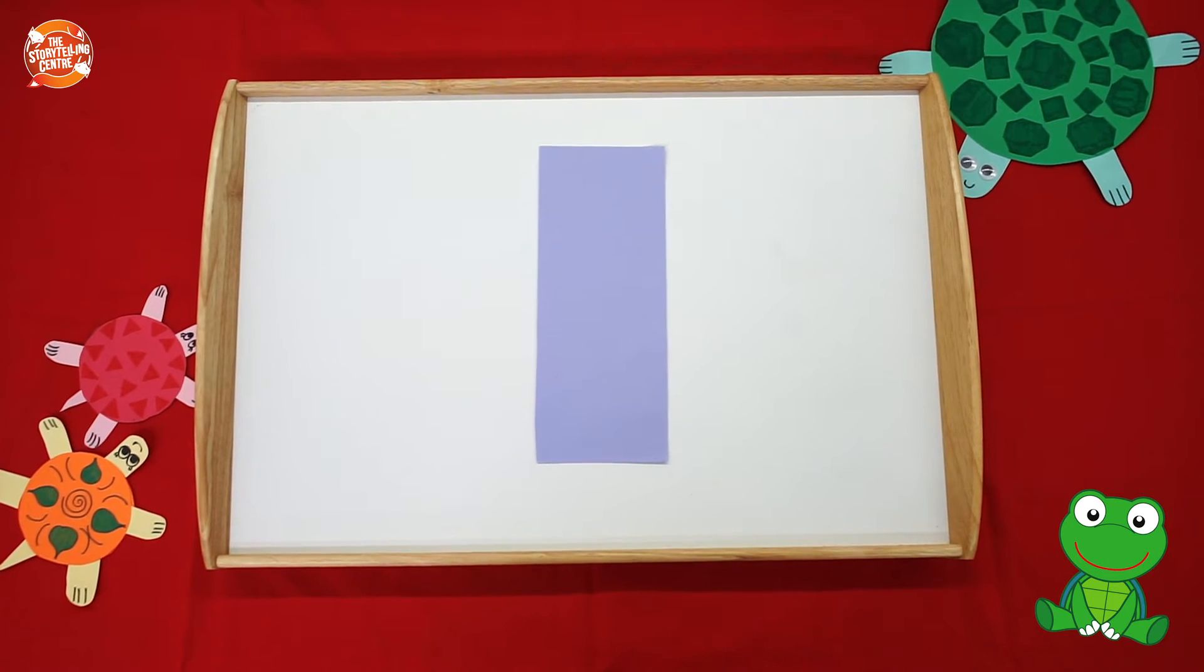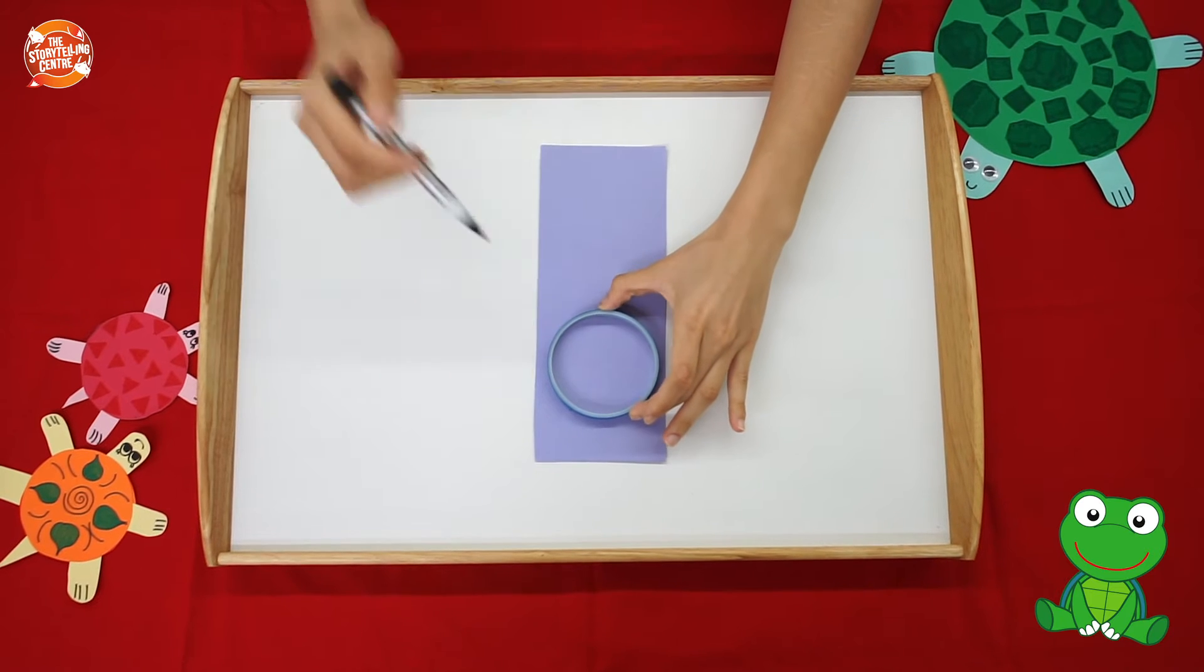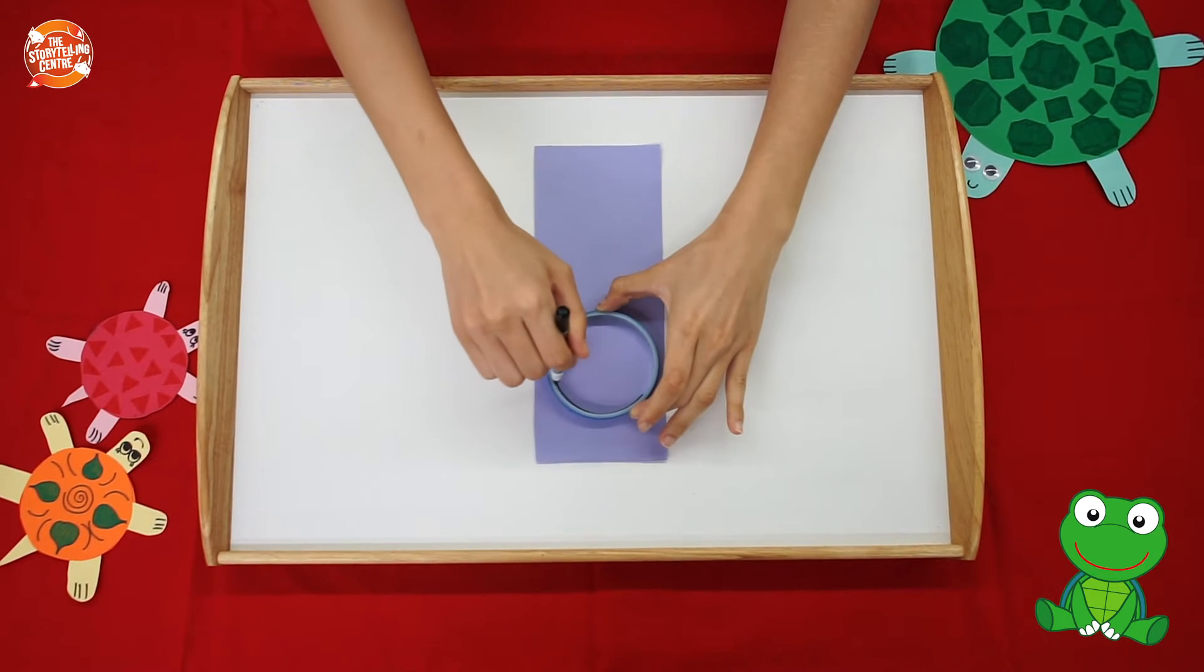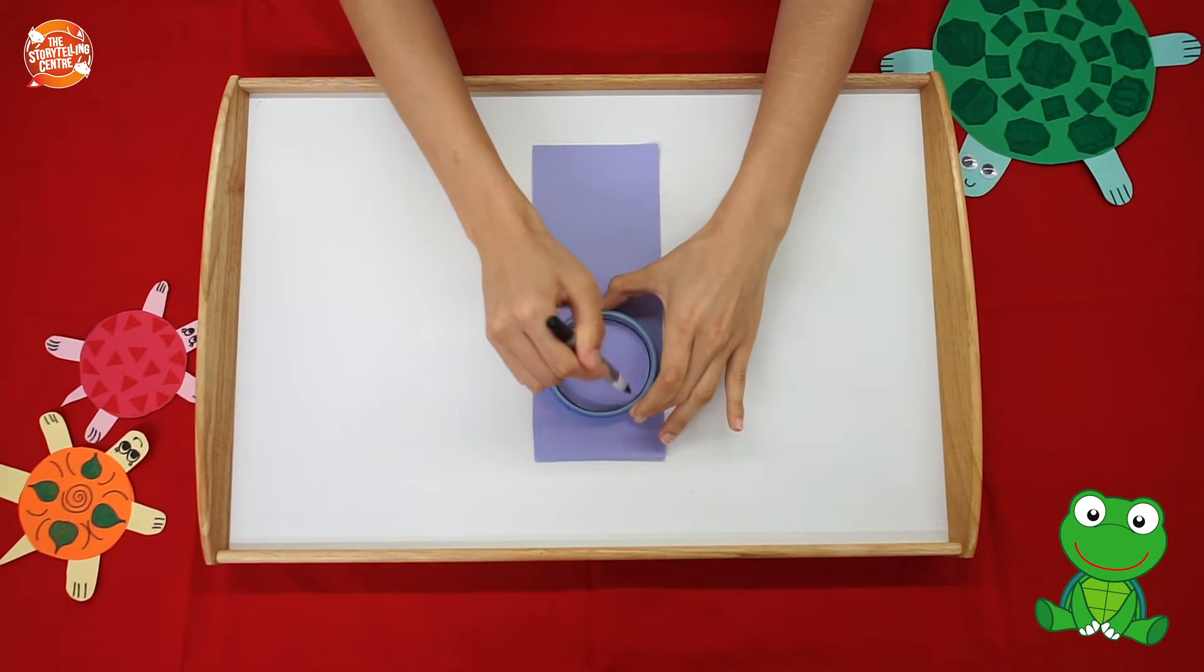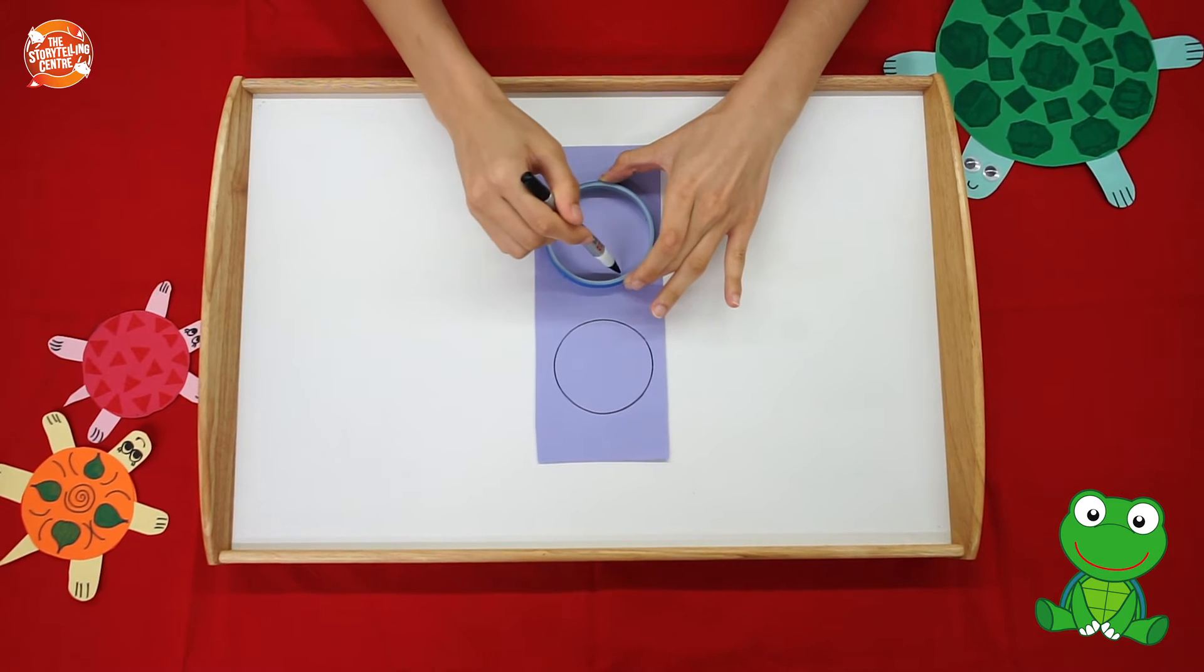Step number one is to use your something circular and trace out two circles. One and two.